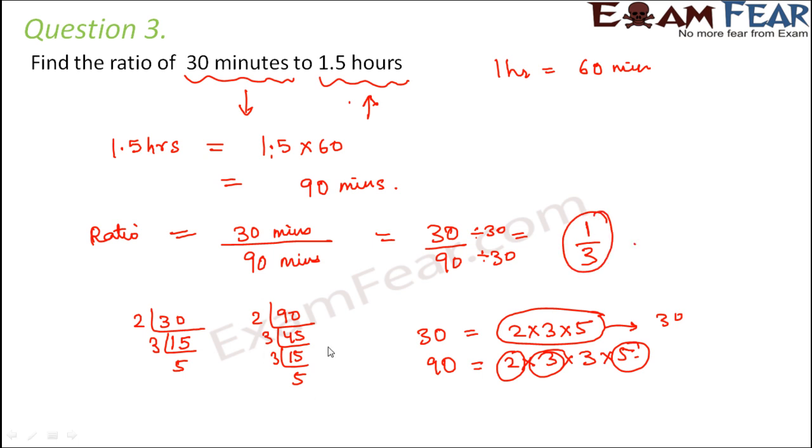So prime factorization technique is one way in which you can solve it easily. So another way of doing this is 30 by 90. 30 can be written as 2 into 3 into 5. 90 can be written as 2 into 3 into 3 into 5. So 5 and 5 will get cancelled. 3 and 3 will get cancelled. 2 and 2 will get cancelled. So you are left with 1 by 3. So you can go for any of these ways to simplify a ratio. So here the final ratio is 1 is to 3. So 1 is to 3 would be your answer.